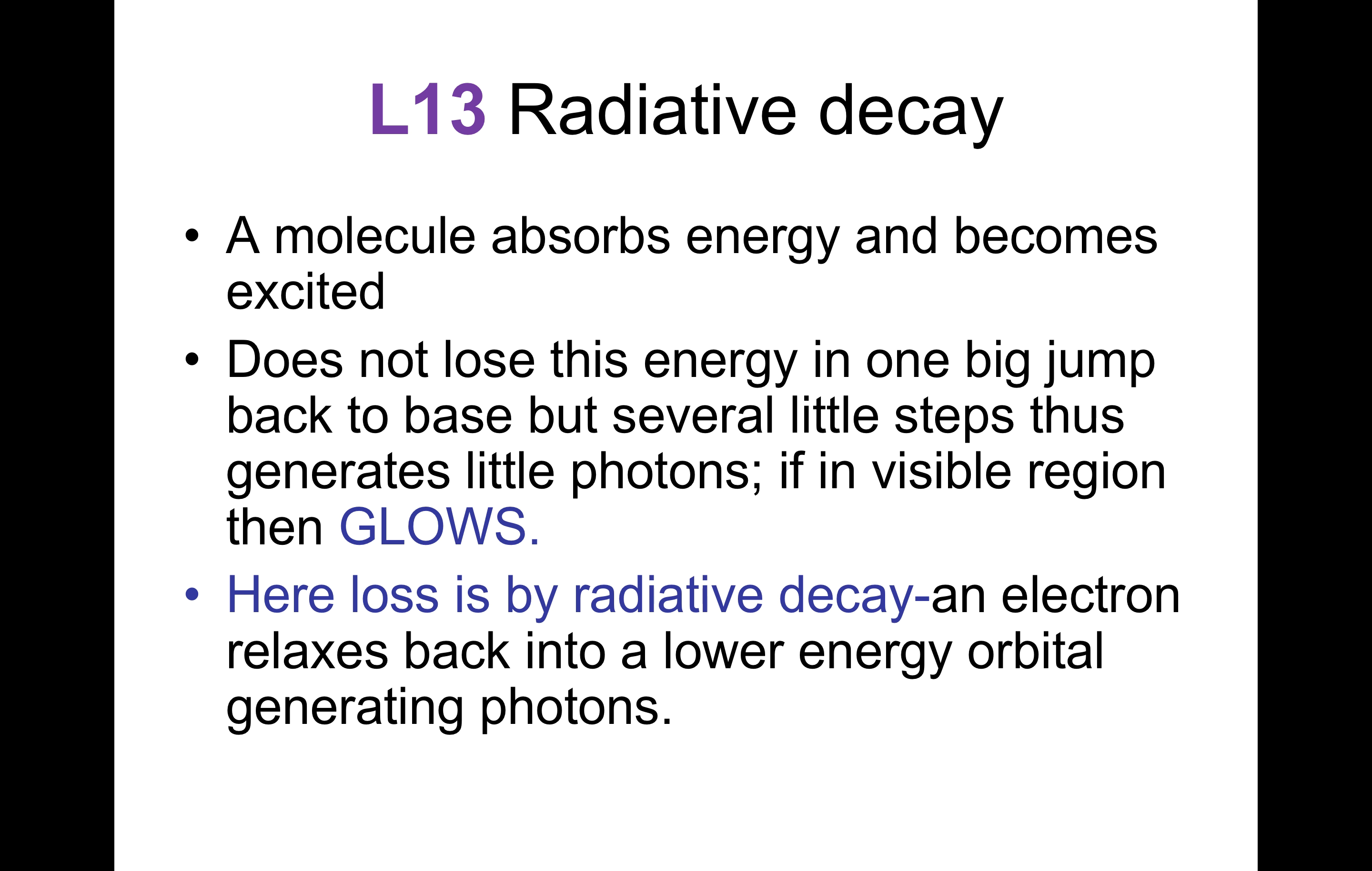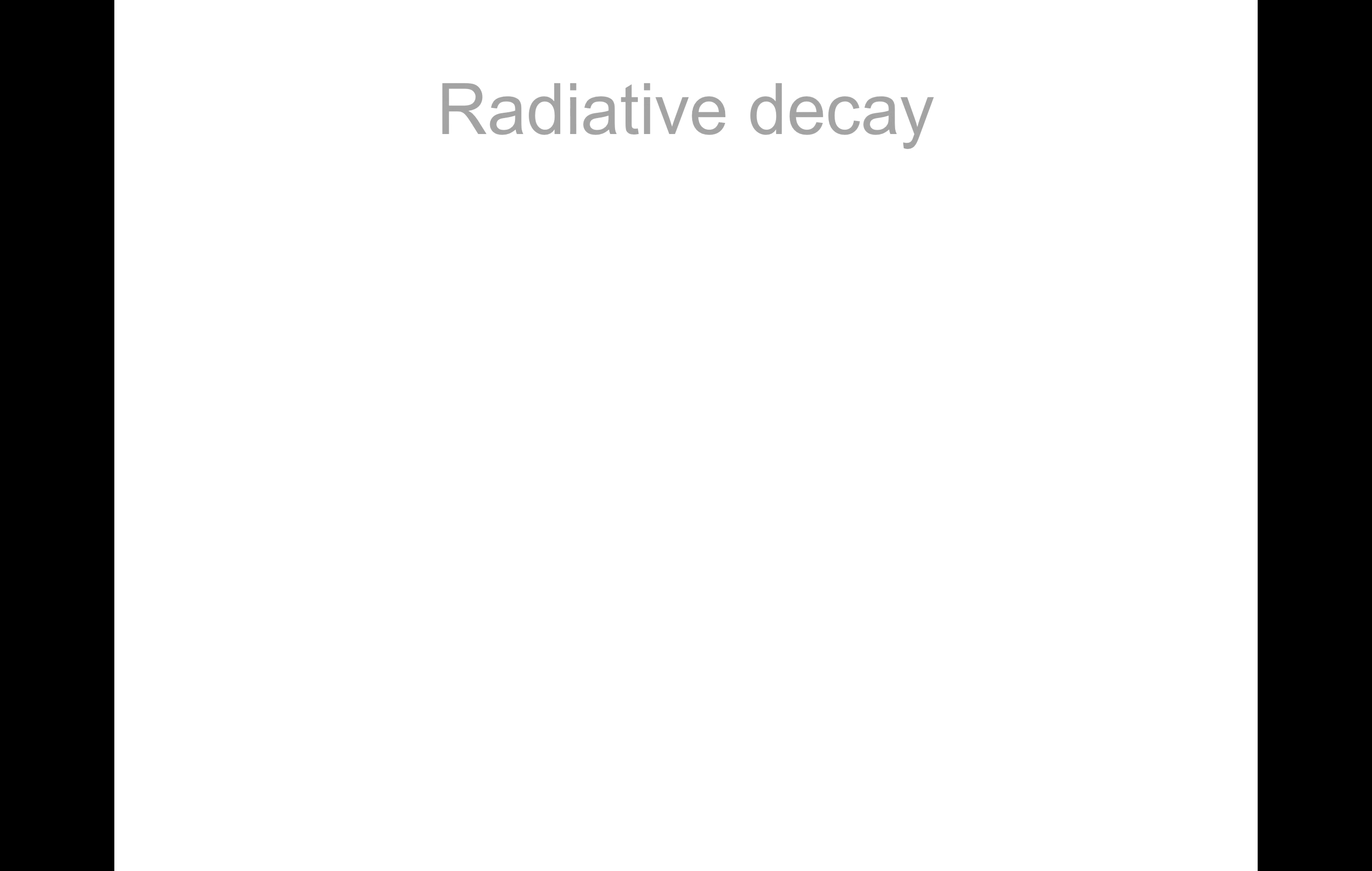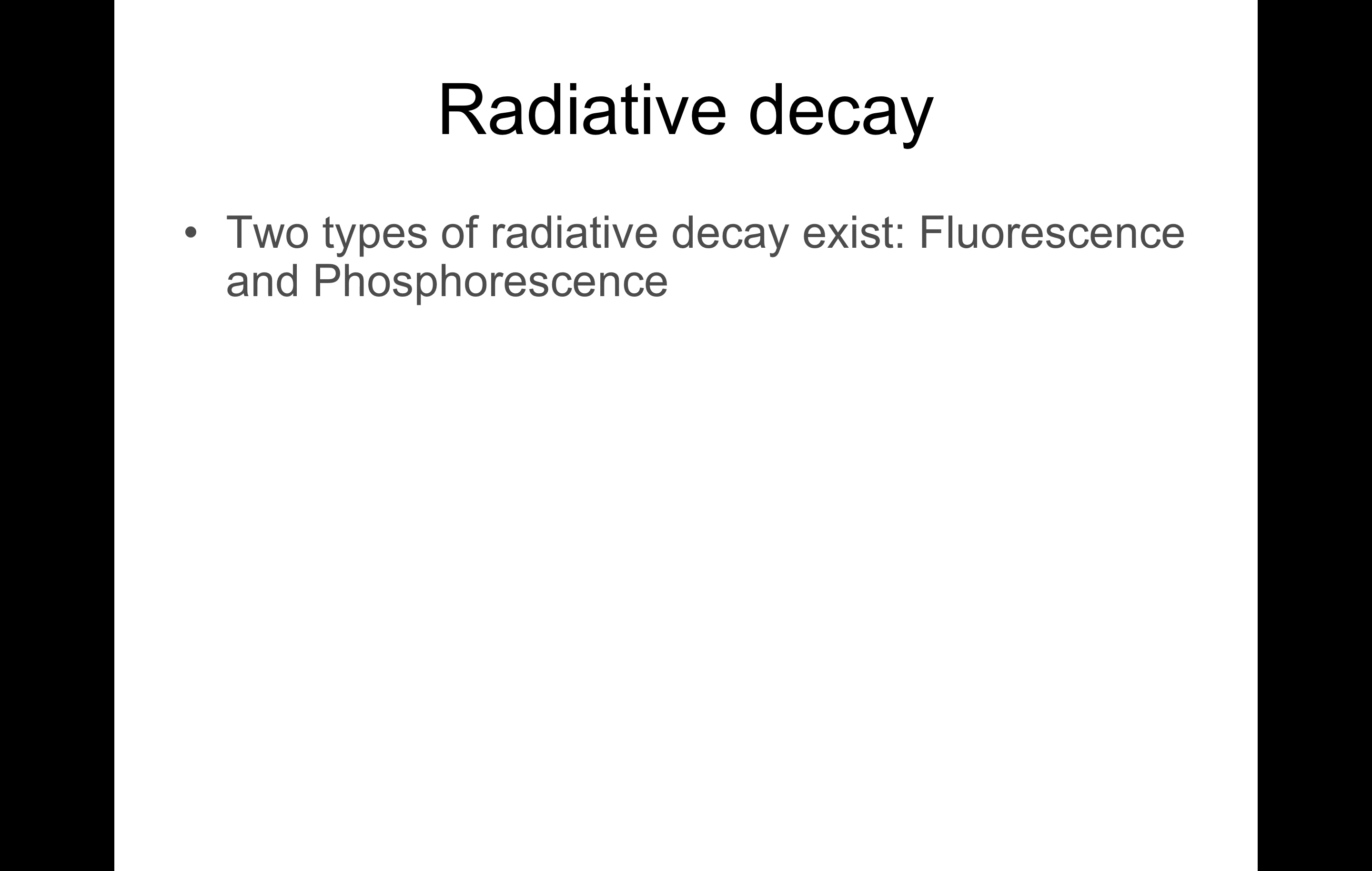Here loss is by radiative decay. An electron relaxes back into a lower energy orbital, generating photons. Two types of radiative decay exist: fluorescence and phosphorescence.